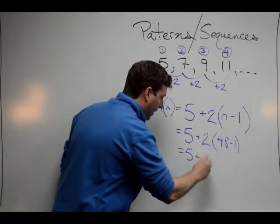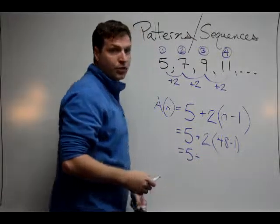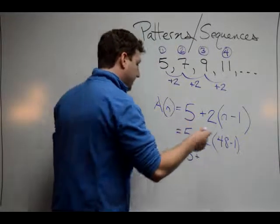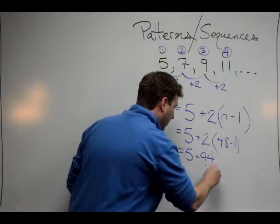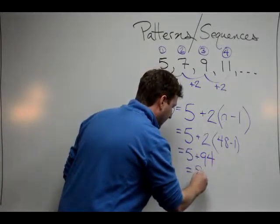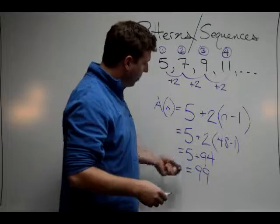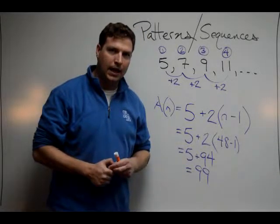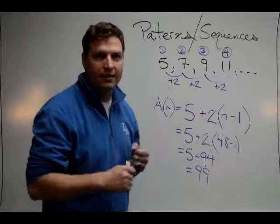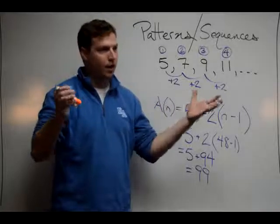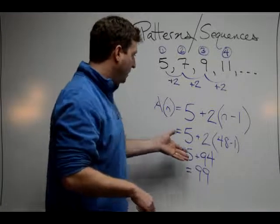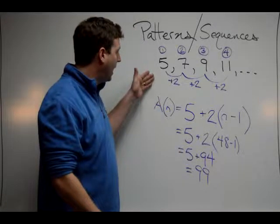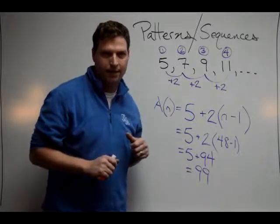And I end up with five plus two times 47 is going to be 94. And I end up with 99. So interestingly enough, my 48th term in this sequence is 99. Now you could do it for the five thousandth term or the one millionth term. Just a simple computation without having to add two that many times.